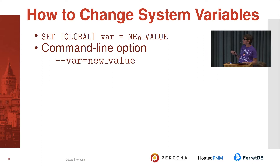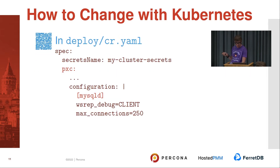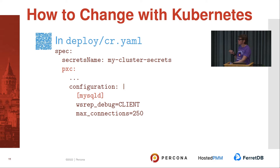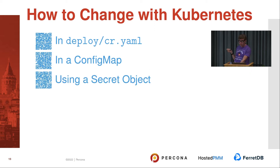You can also use a command-line option when restarting the MySQL daemon, or a configuration file either in the default location or specified via the --defaults-file option. For Kubernetes with the Percona Operator for MySQL, you need to modify the deploy CR.yaml file, find the PXC section, and put your options under the MySQL configuration. You can also use a ConfigMap — create a configuration file and put it into the ConfigMap — or use a Secret object to encrypt your configuration and provide it to Kubernetes.